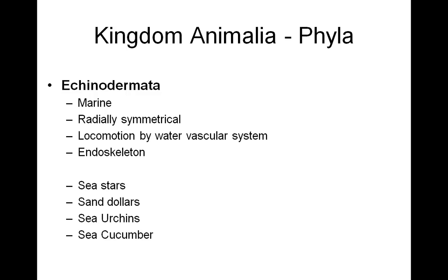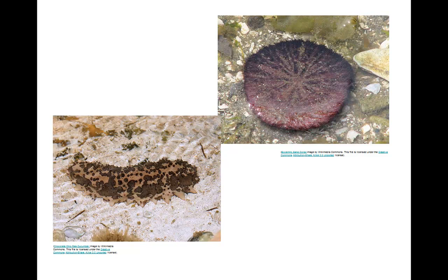Next, we have Echinodermata. These animals are marine, and they show radial symmetry in the adult form, but in the larval state the symmetry is bilateral. Locomotion is by a water vascular system, and these animals also have what is known as an endoskeletal system made up of calcareous plates. Some examples are sea stars, sand dollars, sea urchins, and sea cucumbers. Here we see on the upper right the sand dollar with its tube feet and spines, and then on the lower left a sea cucumber making its way across the sea floor.